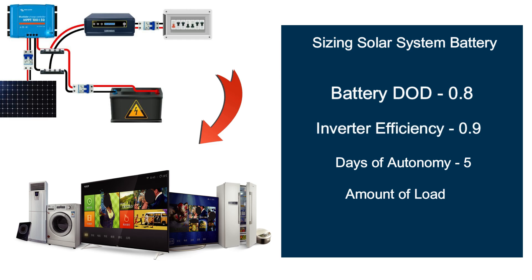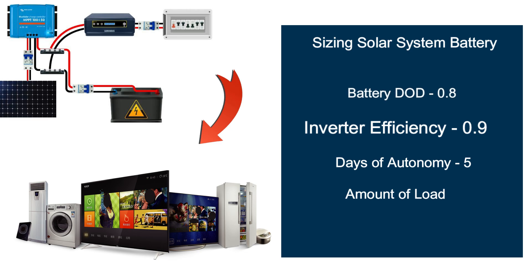Two, inverter efficiency. Most of the appliances in our homes use AC current. Thus we need an inverter to convert the DC current from a battery to AC current so we can power these appliances. This conversion creates some energy loss which must be factored in when sizing our battery bank. A decent inverter such as the pure sine wave type from brands like Ibiva, Vucron and Schneider can offer up to 90% or 0.9 efficiency.